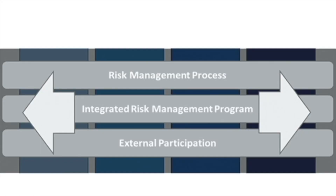Tier 1 is called partial. Here, risk is managed in an ad hoc and sometimes reactive manner. There is limited awareness of cybersecurity risk at the organization level with no organization-wide approach for cybersecurity. This means the organization may not have the processes in place to participate in coordination or collaboration for dealing with cybersecurity risk.